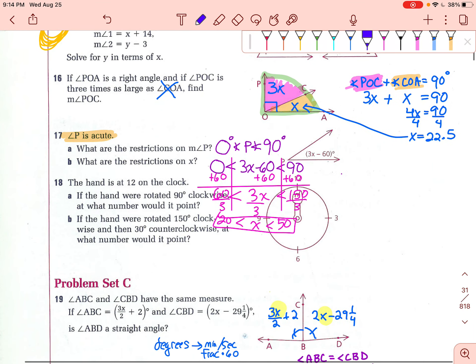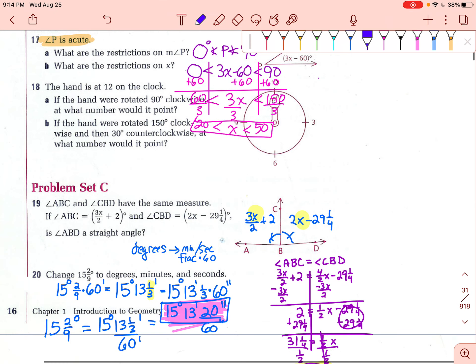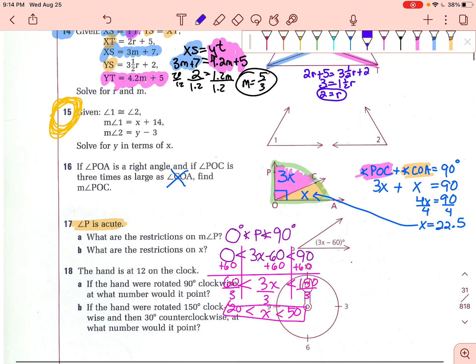Okay, so starting with number 15 on page 16 and 1.2. Do what you can because you can. So the first thing they tell you is that these two angles are congruent to each other. So we know that they have the same measure. So we can put in our little arcs and our congruent tick marks. And then they tell you that angle 1 is x plus 14 and angle 2 is y minus 3. So do what you can because you can.